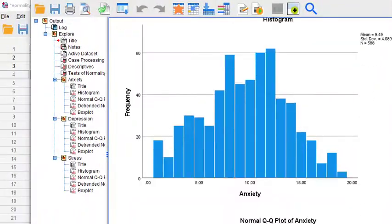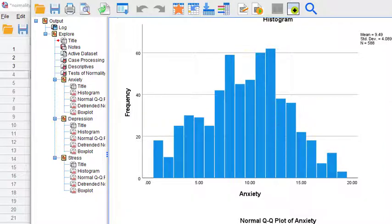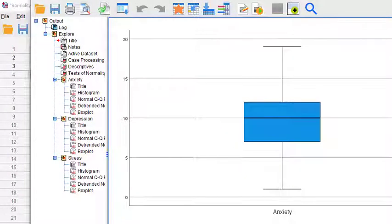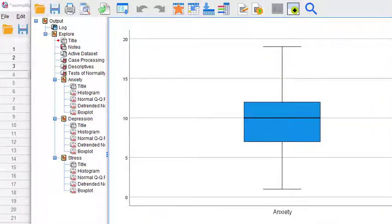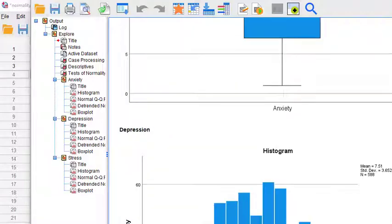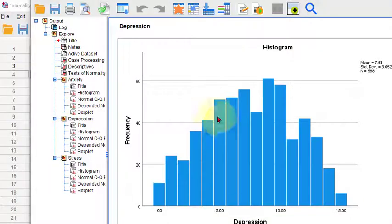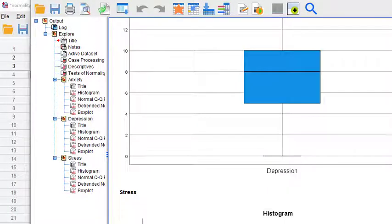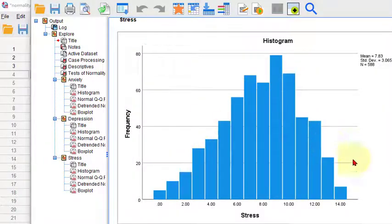And this is why you don't go by the histograms. That one doesn't look too bad to me, but it's not normal. And this one looks pretty normal, but according to the Kolmogorov-Smirnoff and the Shapiro-Wilk, none of these are normal. Depression looks pretty normal to me, but not to the math. That's what we got to go by. Now, this one does look skewed.